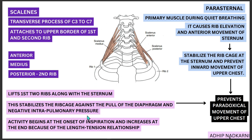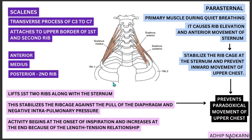Apart from these features, the scalenes have a very important function in synchrony with the parasternal muscles. The parasternal muscles are present just beside the sternum and are primary muscles during quiet breathing, just like the diaphragm. As you inspire, the diaphragm goes down and creates a negative pressure inside the thorax. This negative pressure causes air to enter, but it would also cause the ribs and sternum to collapse inward — and this is prevented by the contraction of the scalene and parasternal muscles.